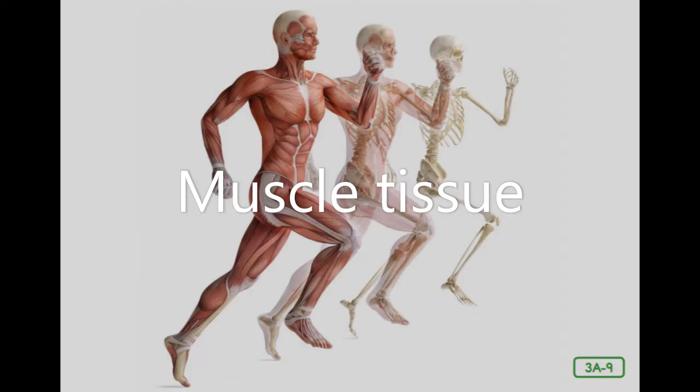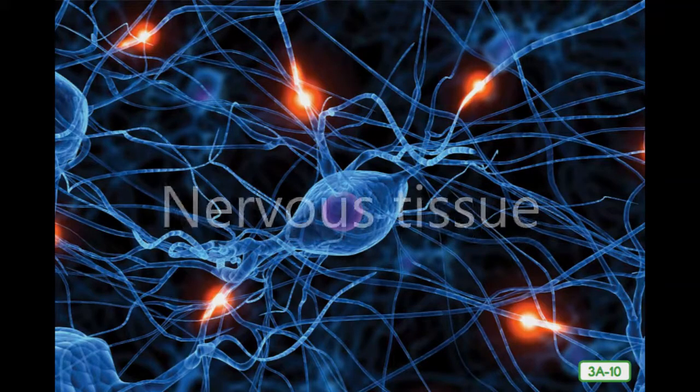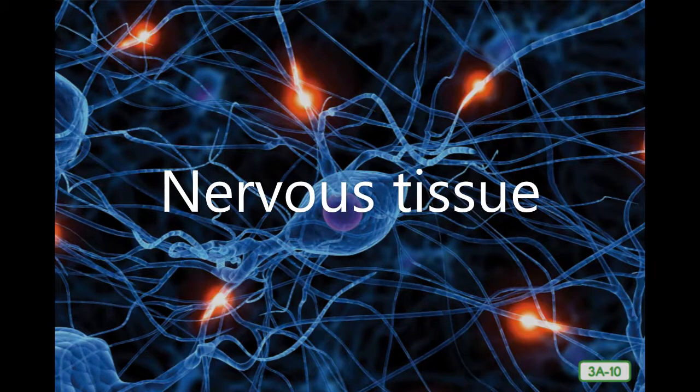So connective tissue connects and muscle tissue moves your body parts. The third type of body tissue is nervous tissue. Maybe you can figure out what it does based on its name. What does it do?